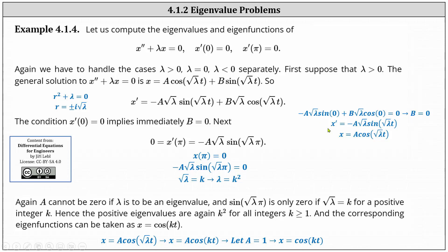So if b is equal to 0, we now know x prime is equal to negative a square root lambda sine square root lambda t, and x equals a cosine of square root lambda t. Using the condition x prime of pi equals 0, we substitute pi for t into x prime and set it equal to 0, giving us negative a square root lambda sine of square root lambda pi equals 0. Since a can't be 0 if lambda is an eigenvalue, the equation is true when sine square root lambda pi is 0, which only occurs when the input square root lambda pi is a multiple of pi. Therefore square root lambda must equal k for a positive integer k, and lambda equals k squared.